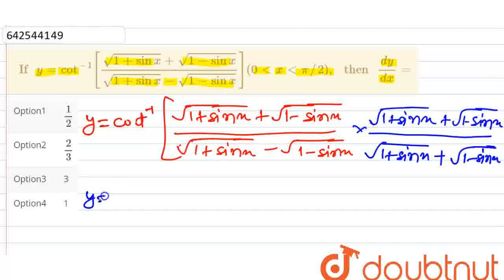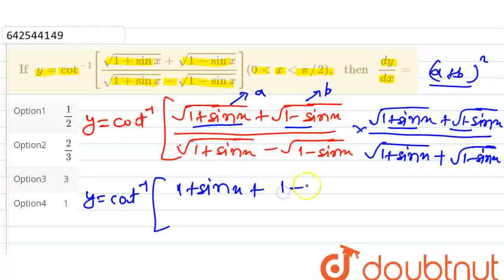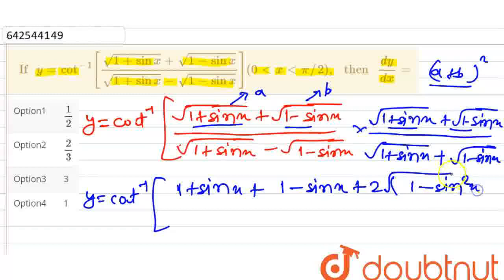So we get y equal to cot inverse. In the numerator, this is (a+b) into (a+b), which is (a+b)², giving a² + b² + 2ab. That is (1+sinx) + (1-sinx) + 2·root(1+sinx)·root(1-sinx). The product root(1+sinx)·root(1-sinx) equals root(1-sin²x), which equals cos x.